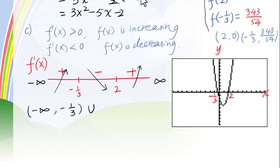From negative infinity to negative 1 over 3, union from 2 to positive infinity, f of x is increasing. From negative 1 over 3 to 2, f of x is decreasing.